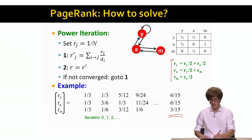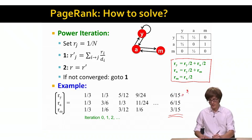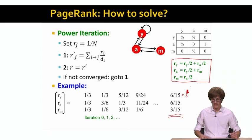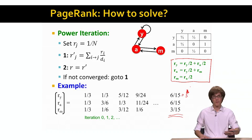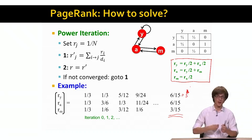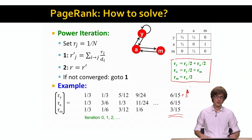Which is exactly the same values as we got before, when we were actually trying to explicitly solve our system of flow equations. 6 over 15 is the same as 2 over 5, and 3 over 15 is 1 over 5. So we got the same solution as before, but now we didn't solve the system of equations explicitly — we simply did this vector-matrix multiplication multiple times and it converged to the values we wanted.